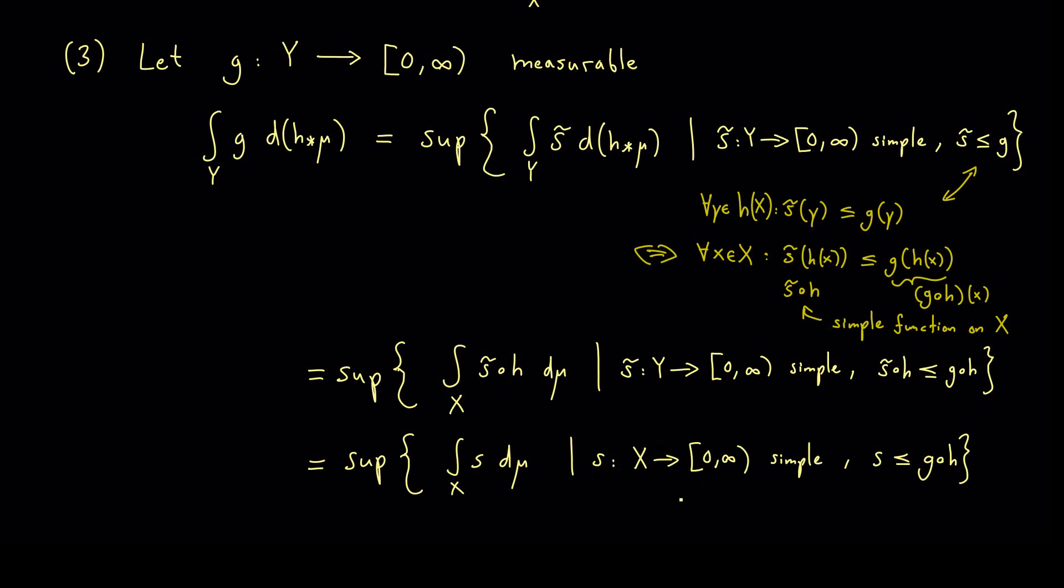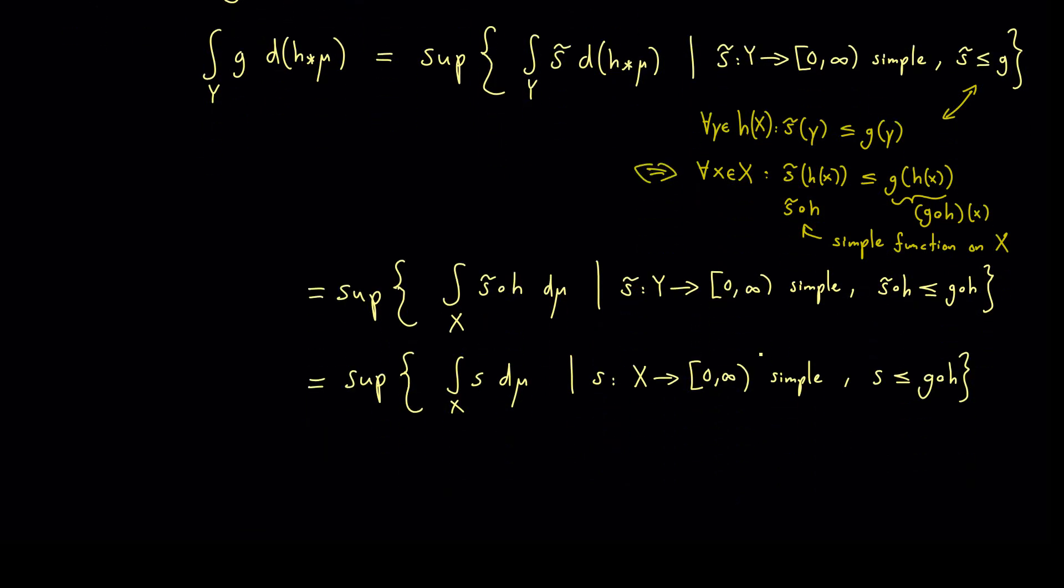You see this looks shorter and is easier because now we look at simple functions on the set x. However, please note that we now look at all the simple functions on x, not just the ones that look like this composition here. This is not hard to show but I will skip this here now. Using this we are indeed finished here because what you see here is just the definition of the integral of the function g composition with h. And now you see our substitution rule is also fulfilled for such measurable functions because the left hand side here is equal to the right hand side here.